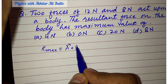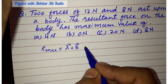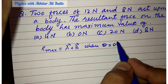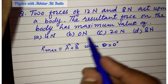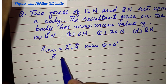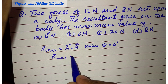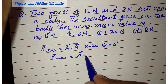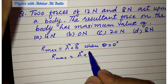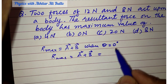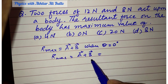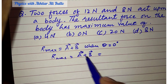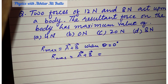The maximum resultant, A plus B, is obtained when theta is equal to 0 degrees. So the maximum resultant will be equal to A plus B. If the angle is 0 degrees, then we add the vectors — meaning we add the magnitudes of the vectors.